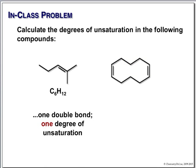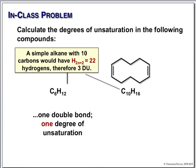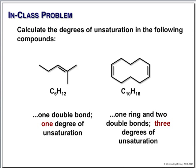For the next compound, we have 10 carbons and only 16 hydrogens. If we had an alkane that was C10, it would have 22 hydrogens. We're missing 6 hydrogens — that's 3 degrees of unsaturation. A very simple way to do this in your head is to look at the compound and say: we have 2 double bonds and we have a ring — that's 3 degrees of unsaturation.